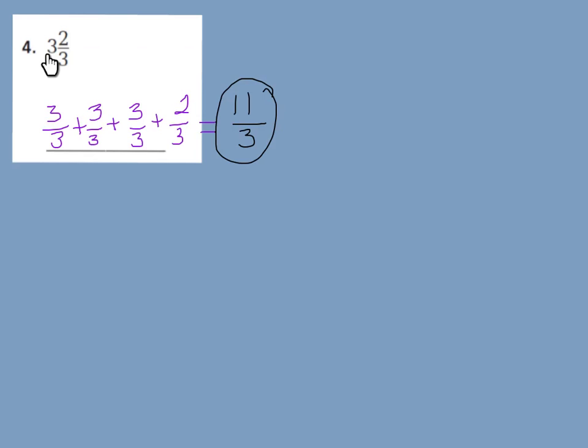I had 3 wholes, and I know they were out of thirds. So I need to have 3 thirds, three times: 3 thirds plus 3 thirds plus 3 thirds. Then I add my 2 thirds. So 3 plus 3 is 6, 6 plus 3 is 9, and 9 plus 2 is 11. I can check my work using multiplication and addition: 3 times 3 is 9, and 9 plus 2 is 11. Keeping my denominator the same gives me 11 thirds.